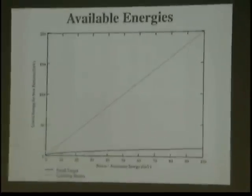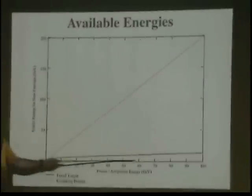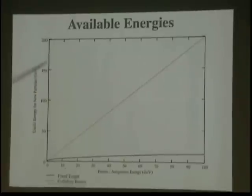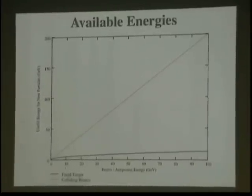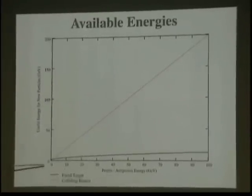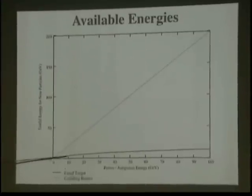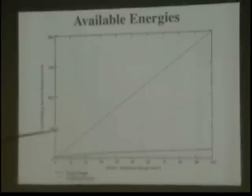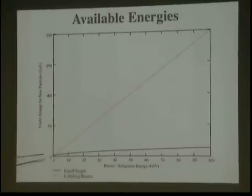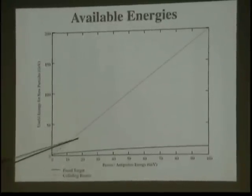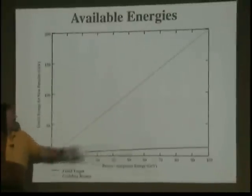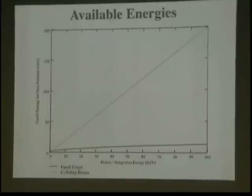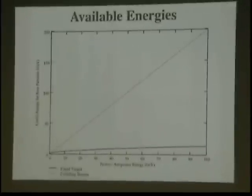Albert said mass is just a form of energy — and he's right. As a quick comparison, here's a plot of beam energy from zero to 100 GeV, and the useful energy for new particles on the Y scale. In fixed target, as we increase the beam energy, your available energy for useful physics goes up very, very slowly. On the other hand, for colliding beams, it goes up at a rate of twice the energy — much more efficient, much more energy available to make new stuff.